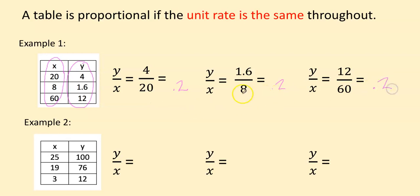Since the unit rate was the same the whole time, 0.2, 0.2, 0.2. Yes, this table is proportional. And finally, example two.